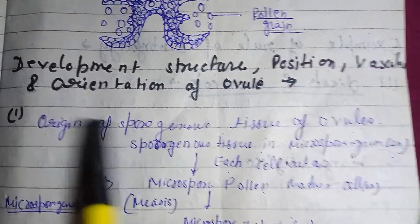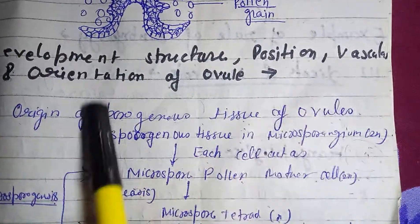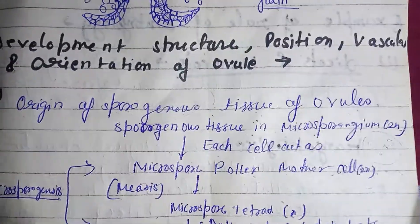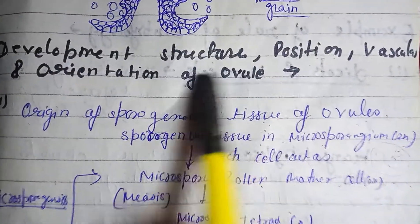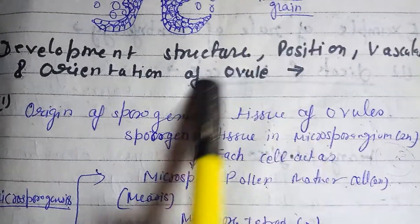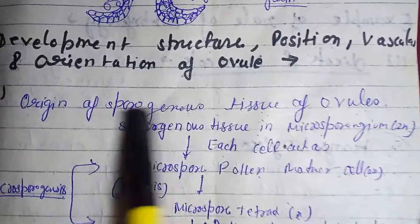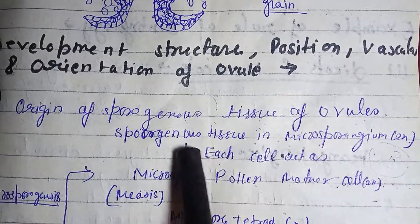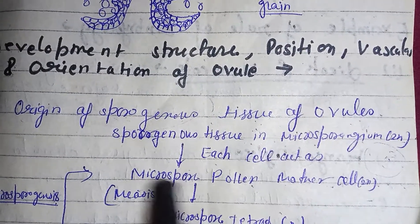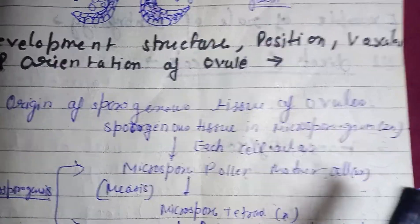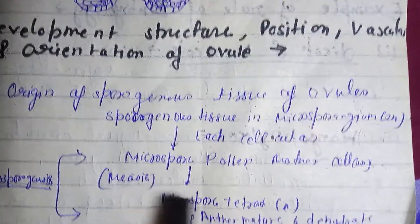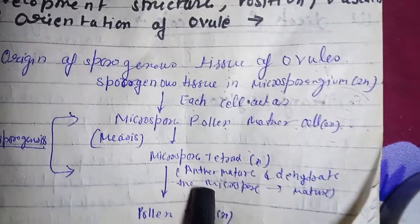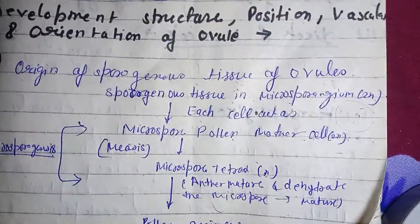The sporogenous tissue of the ovule is diploid in nature. Each cell acts as a microspore or pollen mother cell, which will undergo meiosis. After meiosis, the cells will form a tetrad structure, and then the pollen grains will mature — this is called the megasporogenous tissue.